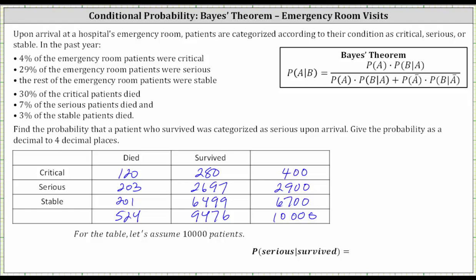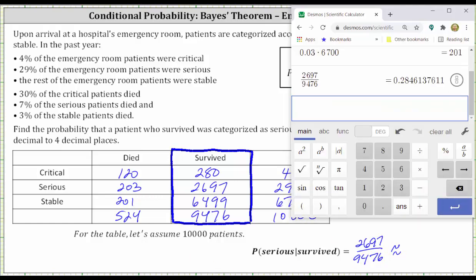Because we are given the patient survived, we're only concerned about the survived column. A total of 9,476 survived. Of those that survived, 2,697 were classified as serious, which means the probability the patient was serious given they survived is 2,697 divided by 9,476. Dividing, to four decimal places we have 0.2846.